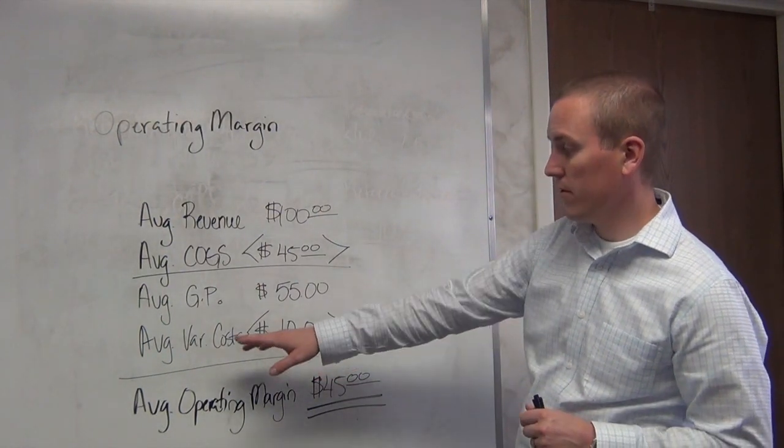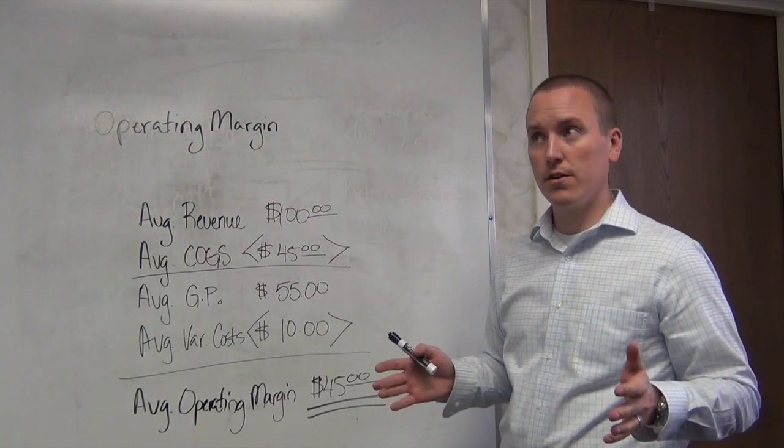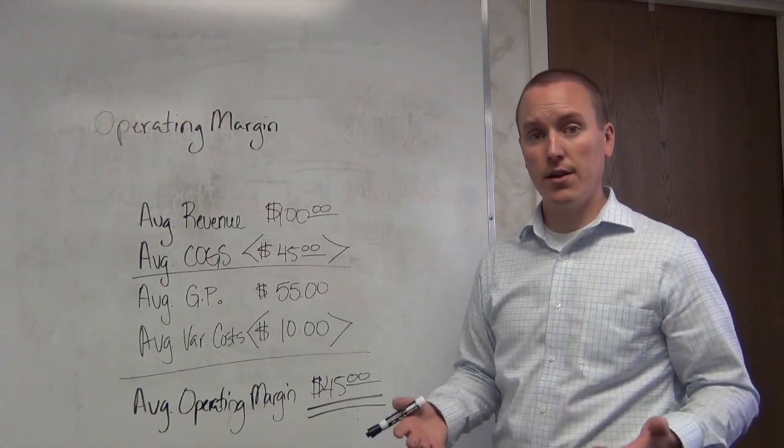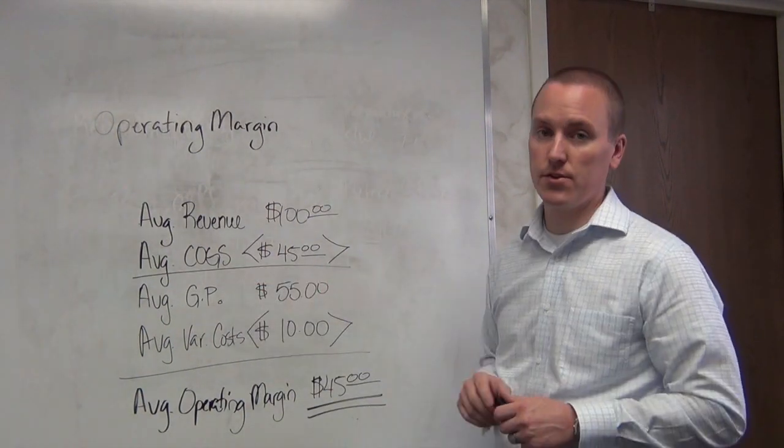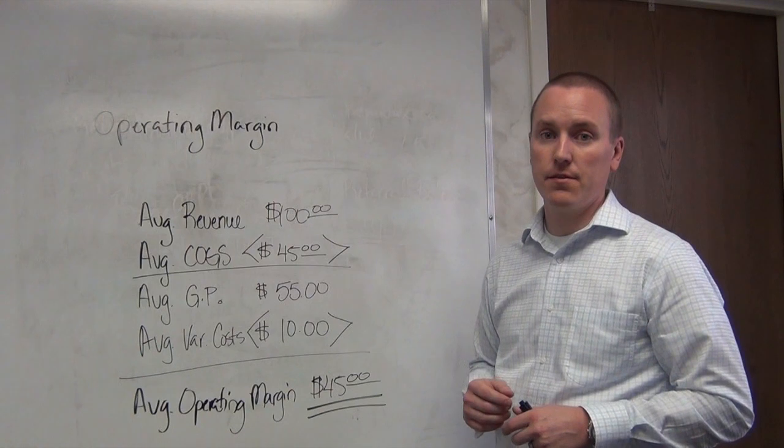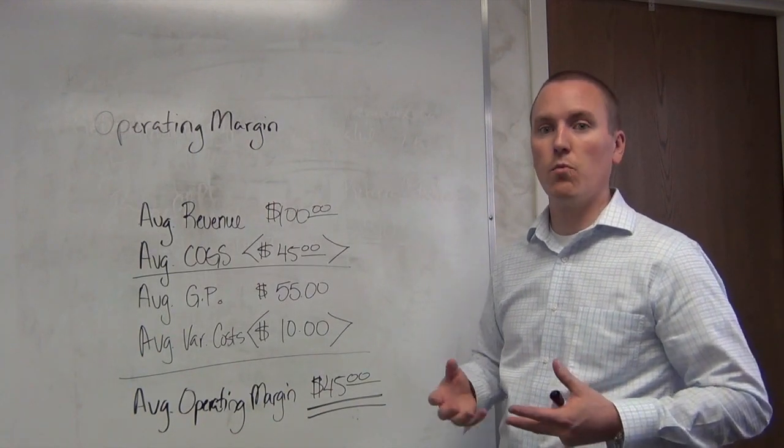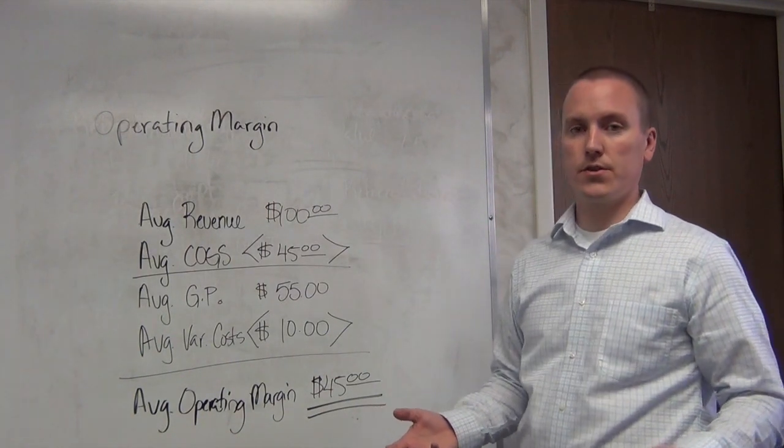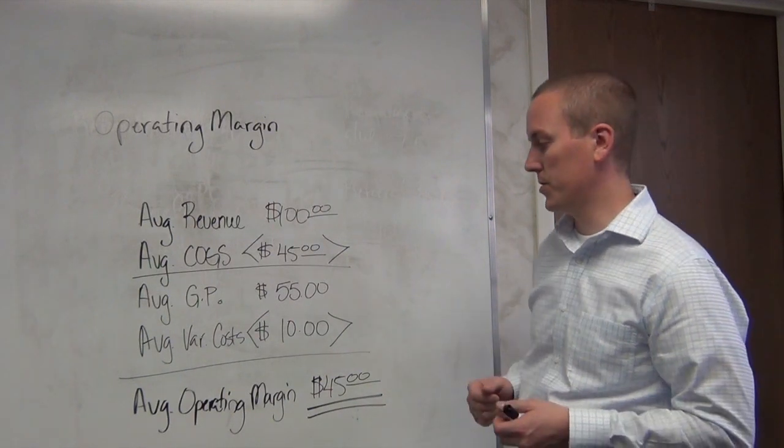So I take the average variable cost. And again, a variable cost is any cost that you incur when you sell an item that isn't cost of goods sold. So the cost of labor to process it is a really good variable cost, but rent wouldn't be a good variable cost because you're going to have that rent whether you sell this widget or you don't sell this widget.